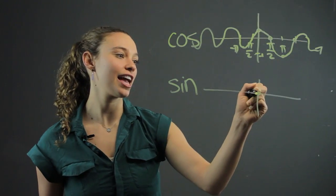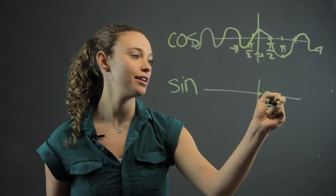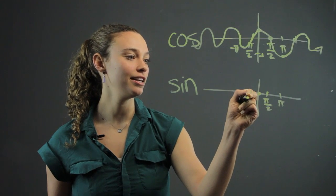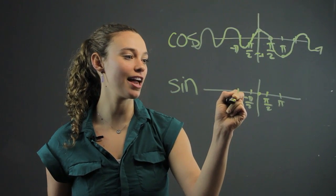Sine, on the other hand, intercepts the origin, and again, keep the same increments, pi over 2, pi, negative pi over 2, and negative pi.